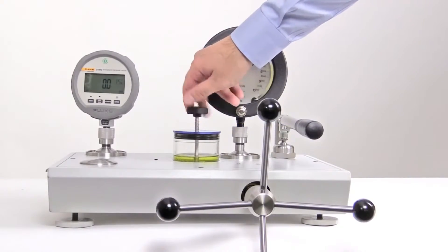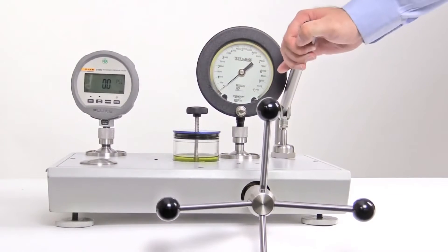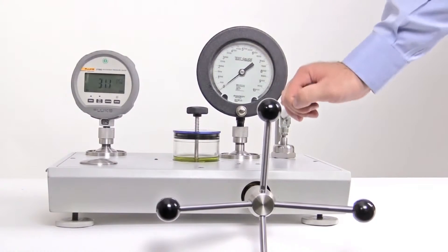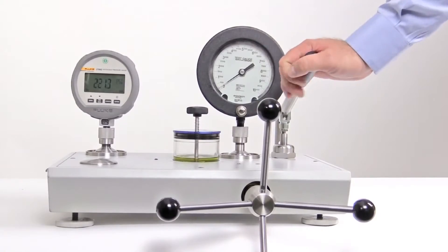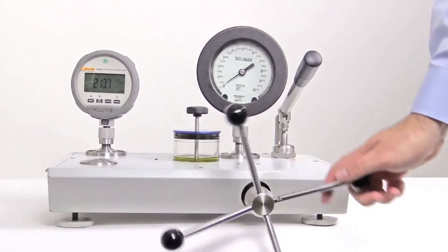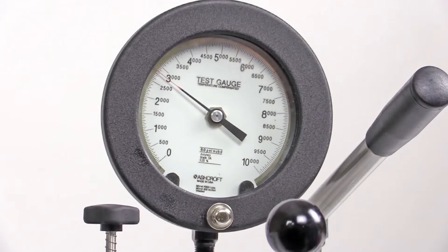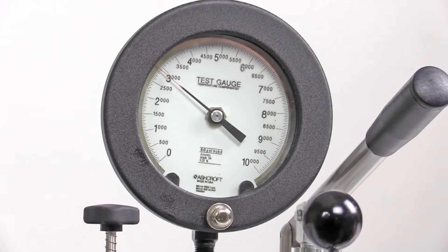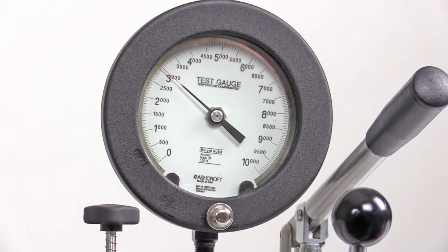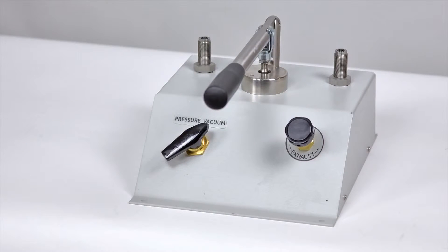To generate pressure, simply close the reservoir valve and use the screw pump to increase the pressure. The screw pump has a fine pitch thread allowing for fine-tuning of pressures. Use the P5510 when you need to generate vacuum to 2 MPa or 300 psi.